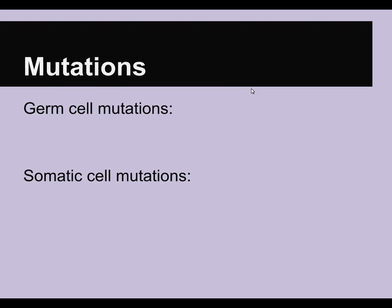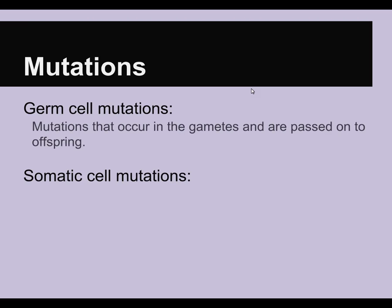There are two types of mutations, and these apply to both chromosome mutations and DNA mutations. The first one is germ cell mutations. These occur in the gametes, which means these mutations are passed on to the offspring. So when you hear of a baby being born with a genetic disorder, the mutation occurred in the germ cell. Your other cells — your body cells, such as your skin cells, the lining of your stomach, or your bones — are called somatic cells.